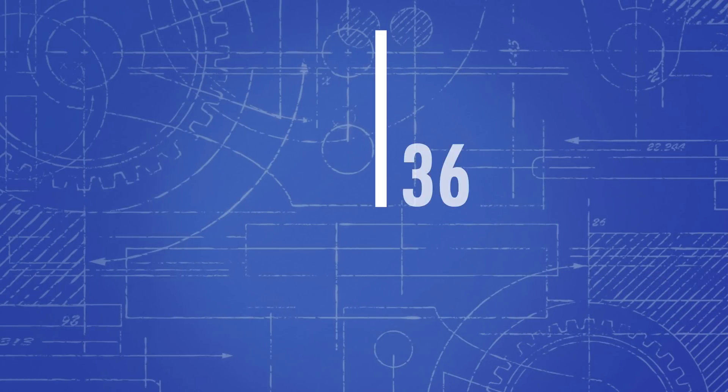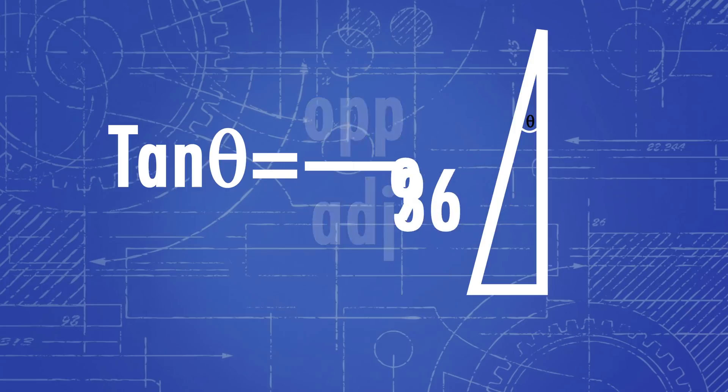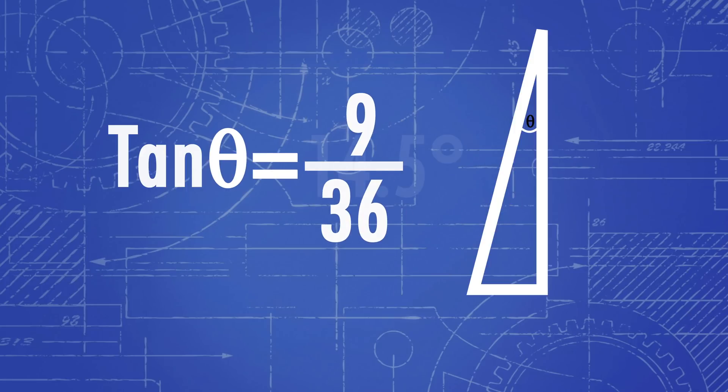Using the Pythagorean theorem, we can calculate the shadow's angle as 14.5 degrees. That's pretty cool. But to measure the circumference of the Earth, we're going to need two spots. So let's go on a trip.